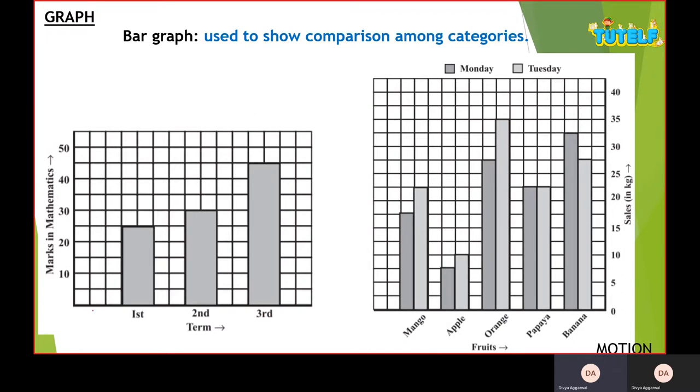How do we read this graph? When we represent the graph, I have two lines. This is x-axis, this is y-axis. This is my origin point.